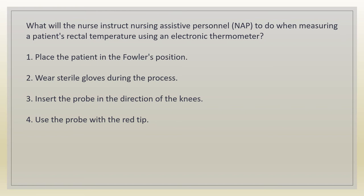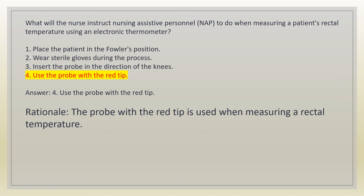What will the nurse instruct nursing assistive personnel NOT to do when measuring a patient's rectal temperature using an electronic thermometer? 1. Place the patient in the Fowler's position. 2. Wear sterile gloves during the process. 3. Insert the probe in the direction of the navel. 4. Use the probe with the red tip. Answer: 4. The probe with the red tip is used when measuring a rectal temperature.